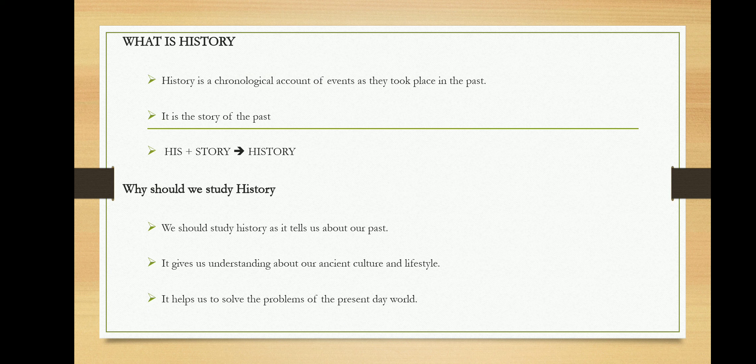Let's understand what history is. History is a chronological account of events which occurred in the past — events which have happened in a particular order, telling us about the past. History is also split as 'his' plus 'story.' There is a famous saying that today's newspaper is tomorrow's history.